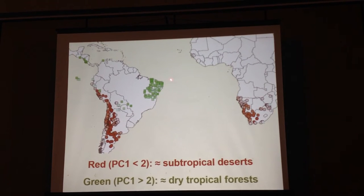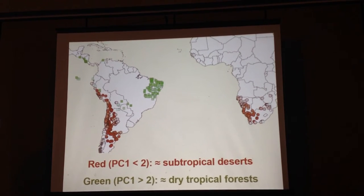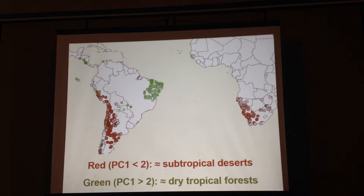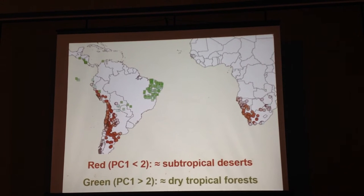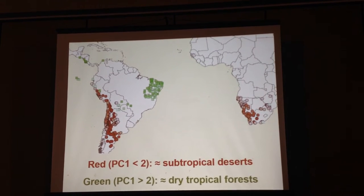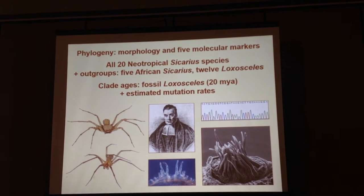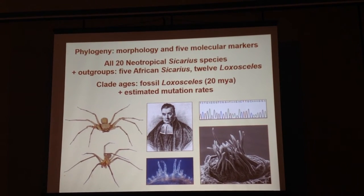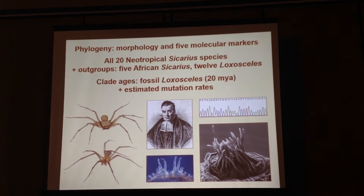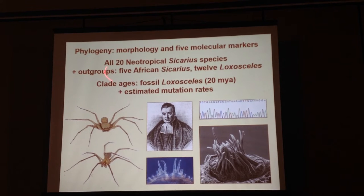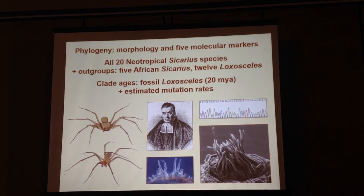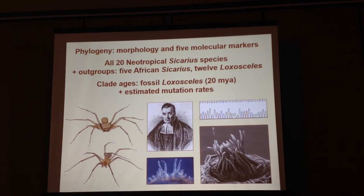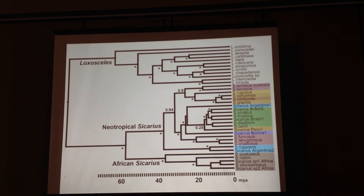So the question here is: these two groups with distinct climates, how do they behave in the phylogeny? Are they two reciprocally monophyletic groups, or how is the pattern? There is not yet a comprehensive phylogeny of the genus. So we estimated a phylogeny for Sicarius spiders based on morphology and five molecular markers, including all the neotropical species, and an outgroup represented by African Sicarius and the sister genus Doxocelis. We also estimated clade ages using a fossil Doxocelis and mutation rates. This is what I found.